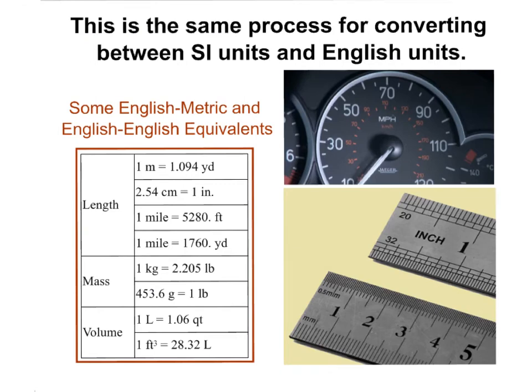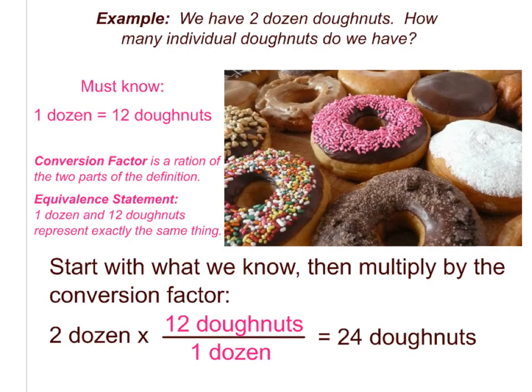This is the exact same process that you would use for converting between SI units and English units. It's a pain. It's so awful, and we hate to do it in science, but sometimes that happens, and we need to convert English to metric or metric to English. Usually we want to convert English to metric because we really don't want to have to work with English units. Here are some conversion units. One meter equals 1.094 yards. Here's centimeters and inches. Here's in mass, kilograms and pounds.